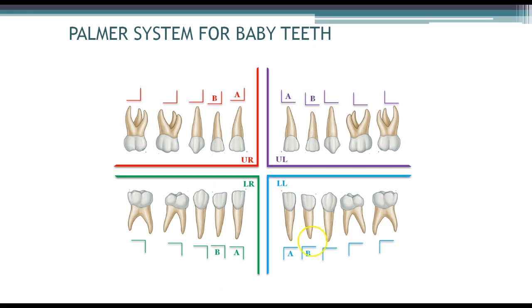The lateral incisors will be B, our canines will be C, and our first molars will be D — because remember, children do not have premolar teeth. Then our second molars are E. Every single quadrant will have these letters per tooth, but the main thing are the shapes. Once you figure out the shape, you'll figure out the quadrant, and once you figure out the letter, you'll figure out exactly which tooth it refers to.